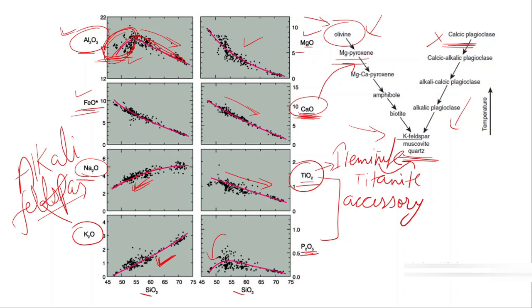P2O5 shows in the beginning an increasing trend and later a decreasing trend. Why? Because earlier it is not crystallizing, and at the end it is crystallizing along with silica and other late-forming minerals to form apatite. It is present as a different phase known as apatite.